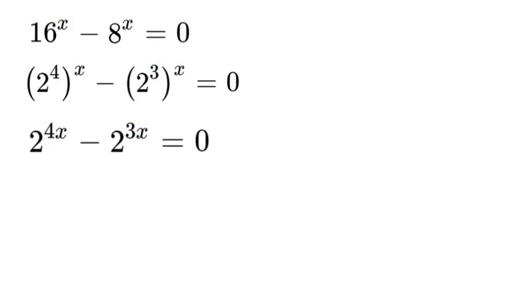Now what we're gonna do is factor out an x from 4x. So we're gonna have 2 to the power of 3x plus x minus 2 to the power of 3x is equal to 0.